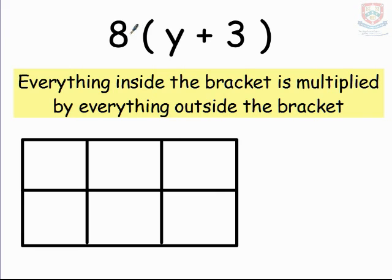We also know that there's a multiply symbol missing between the number and the bracket. It's implied. Always remember that means multiply. But it doesn't mean just 8 times y. It's 8 times the bracket.